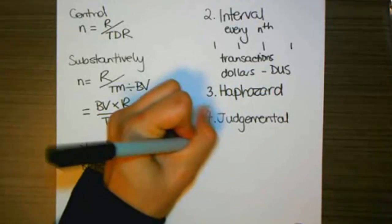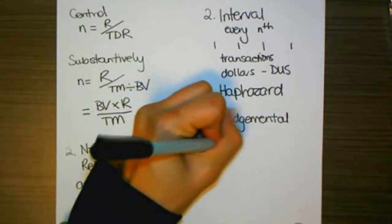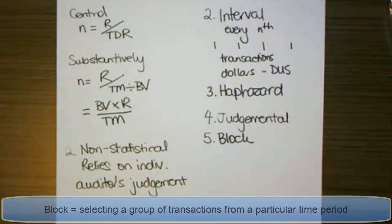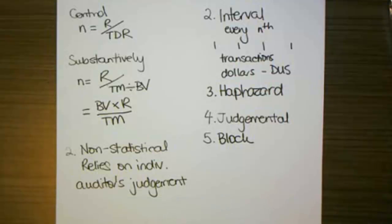And the last method is what is called block. And block involves selecting transactions from a particular period of time, one month or two months out of the financial period. Now typically that is frowned upon when you're testing existence of assets or you're testing occurrence of sales or accuracy of sales.